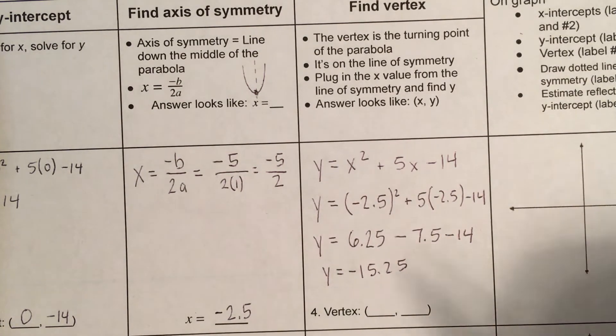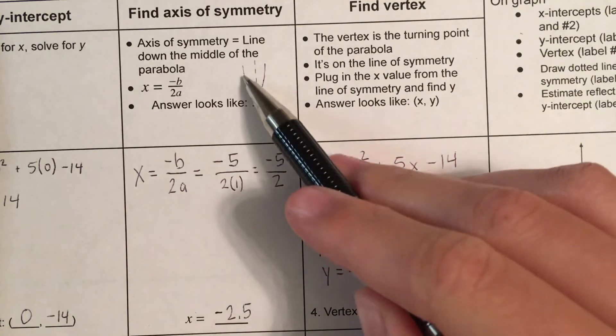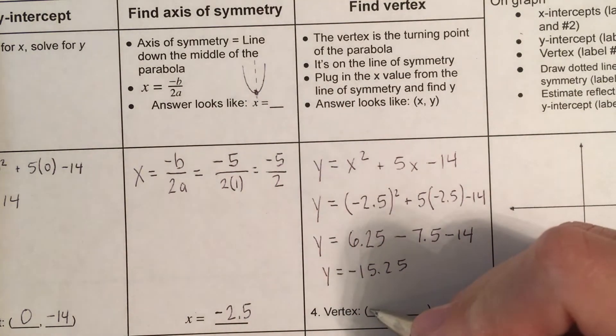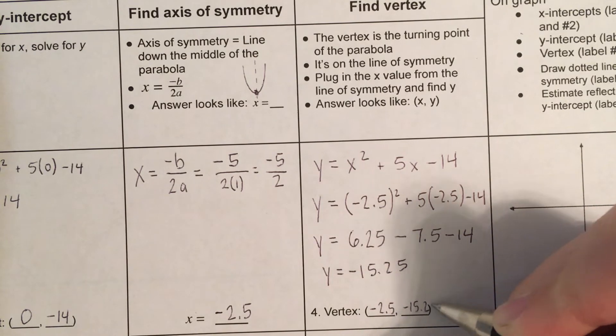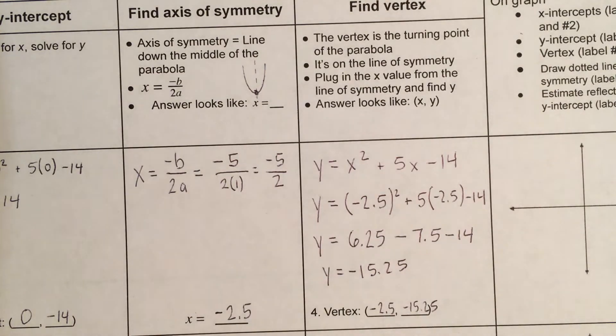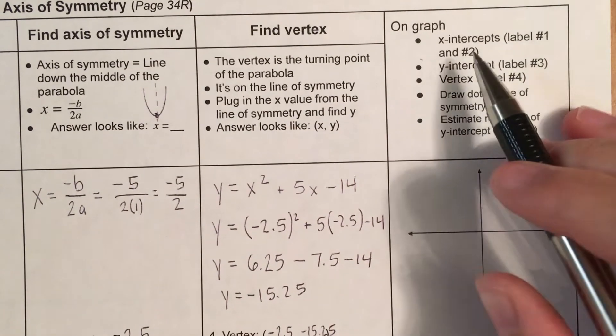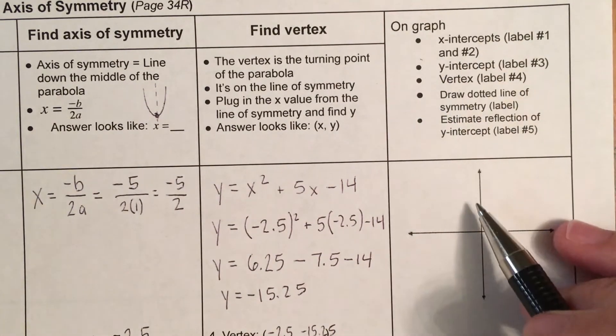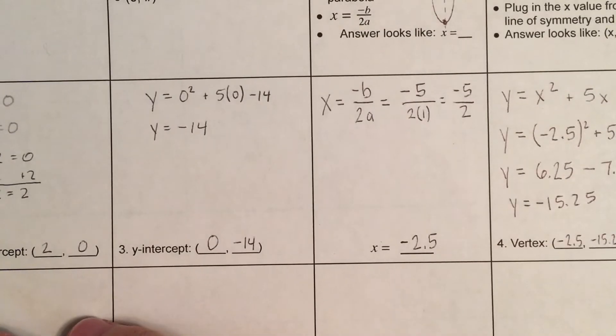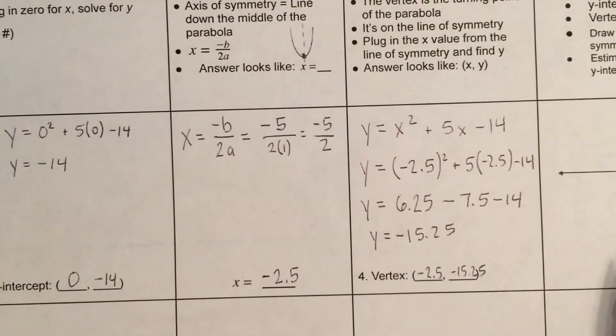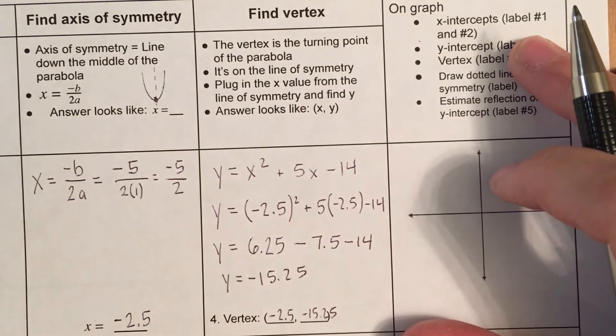So, my vertex, the place where this parabola is going to turn, is at an x value of negative 2.5 and a y value of negative 15.25. So, now, I have a lot of information and I'm ready to graph. Now, pay attention to how I want this graphed.